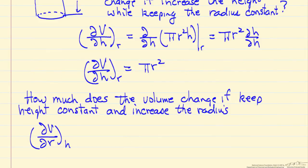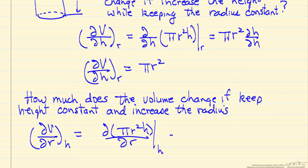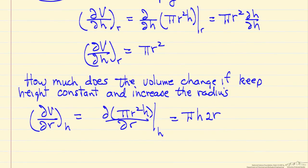We ask a similar question: how much does the volume change if the height is kept constant and we change the radius? The partial derivative of volume with respect to radius is the partial derivative of πr²h with respect to r at constant h. Pi is constant, h is constant, and the derivative of r² with respect to r is 2r. So this partial derivative is 2πrh.